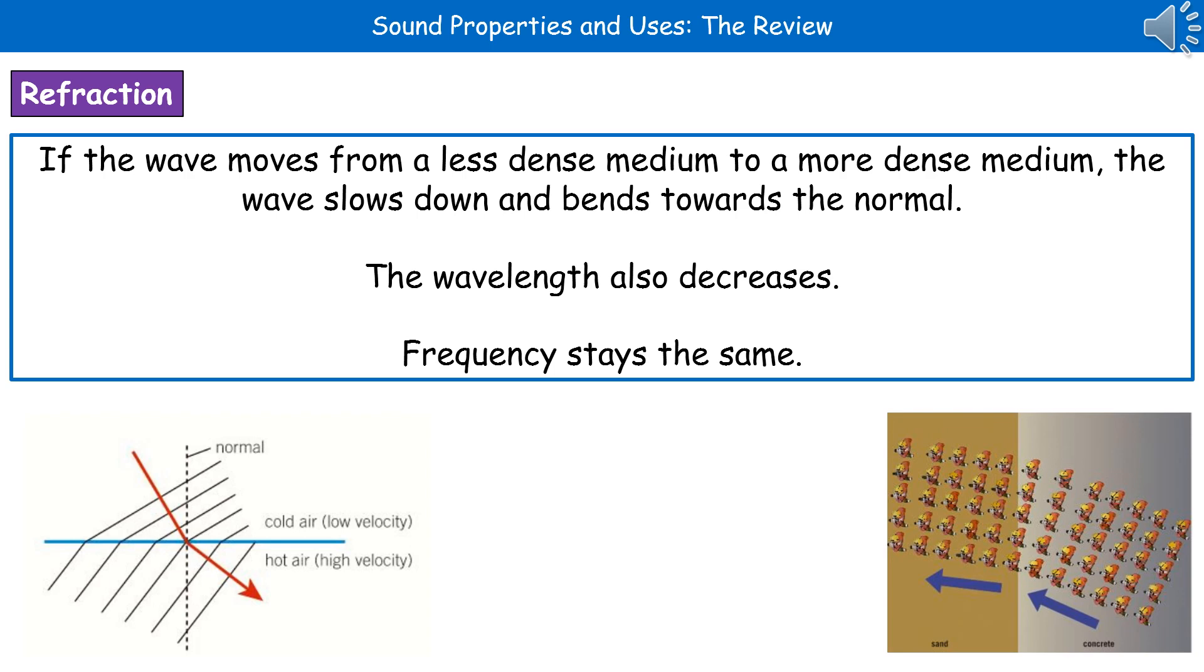Perhaps an easier way to think about it, if you're struggling to visualize that, is if we've got a whole load of people all marching in a line. If they start off on a concrete surface, it's really easy to march on that, so they're going to be able to move nice and quick all in line together. However, if they then hit this area that turns to sand, those that start marching on the sand first are going to slow down. So we'll see those lines are going to start to bend. That's a little model we can use to understand this.